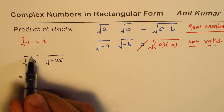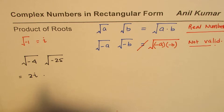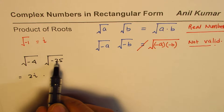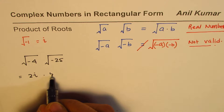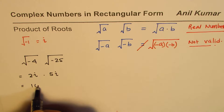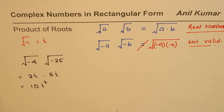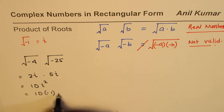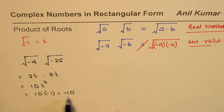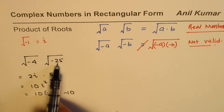So square root of minus 4 can be written as 2i, and square root of minus 25 can be written as 5i. This gives us 2i times 5i, which equals 10i². Since i² equals minus 1, this equals 10 times minus 1, which is minus 10. That is the answer for square root of minus 4 times square root of minus 25.